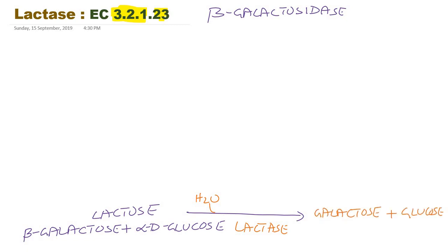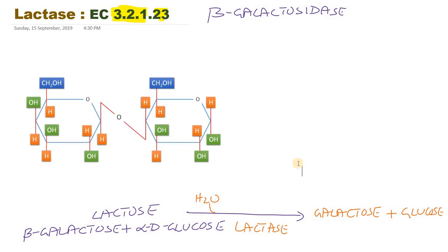I can explain this reaction with the help of structure. You can see the structure of lactose — this molecule is galactose whereas this one is glucose. To differentiate between glucose and galactose, you can watch my videos on carbohydrate chemistry where I explained isomers. Galactose and glucose are epimers with respect to carbon number 4. For glucose, the carbons are numbered 1, 2, 3, 4, 5, and 6.